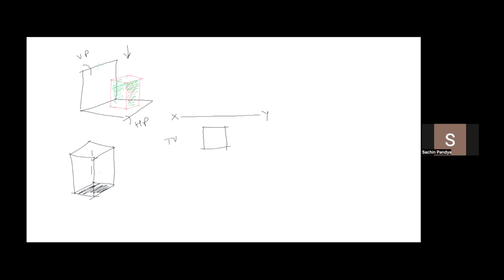When the axis is perpendicular to HP, the top view gives the true shape. They said two faces are parallel to VP — that means parallel to XY. Your XY line represents both HP and VP, so don't get confused. Draw the square with those two faces parallel to XY. This is the front view, this is the top view, and this side is 35mm.